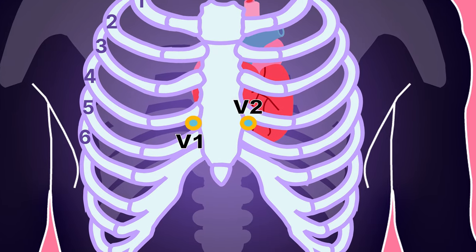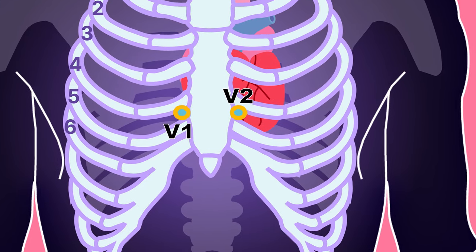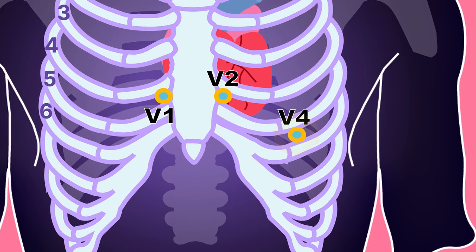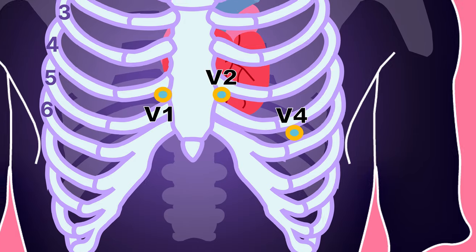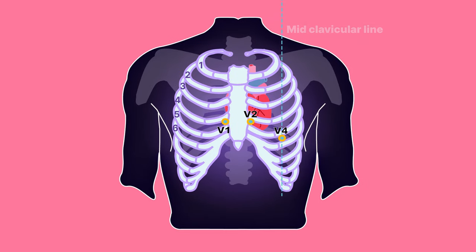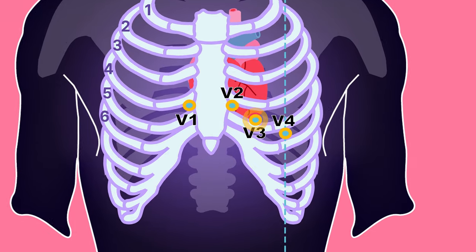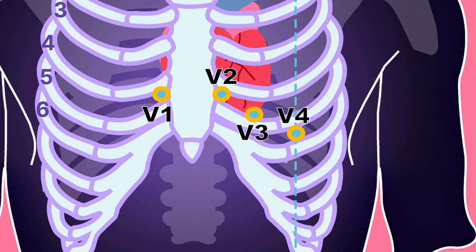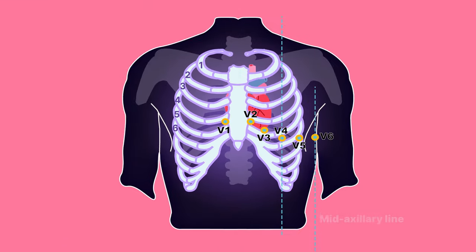V4 should be placed before V3. V4 is placed in the fifth intercostal space in the mid-clavicular line, as if drawing a line downwards from the centre of the patient's clavicle. V3 is placed directly between V2 and V4. V5 is placed directly between V4 and V6. V6 is placed over the fifth intercostal space at the mid-axillary line. V4 to V6 should line up horizontally along the fifth intercostal space.